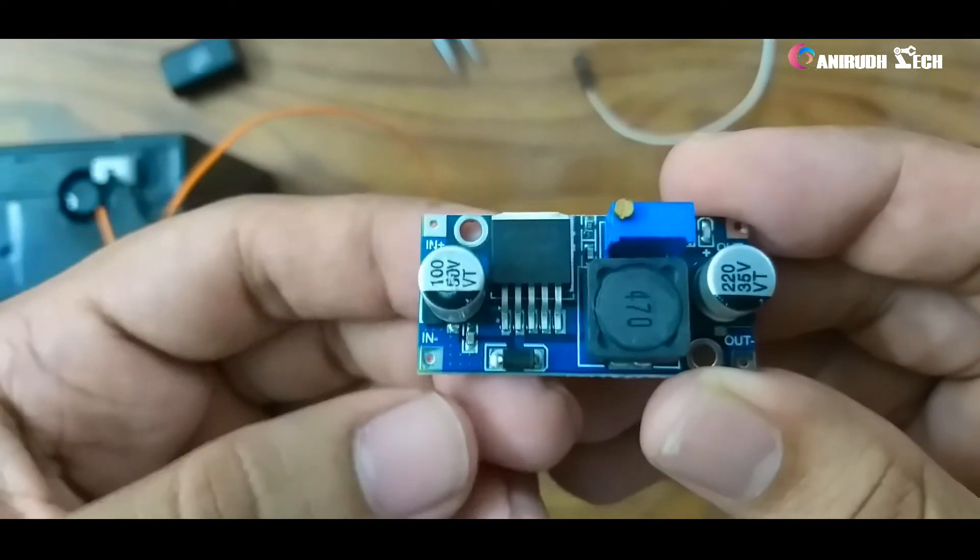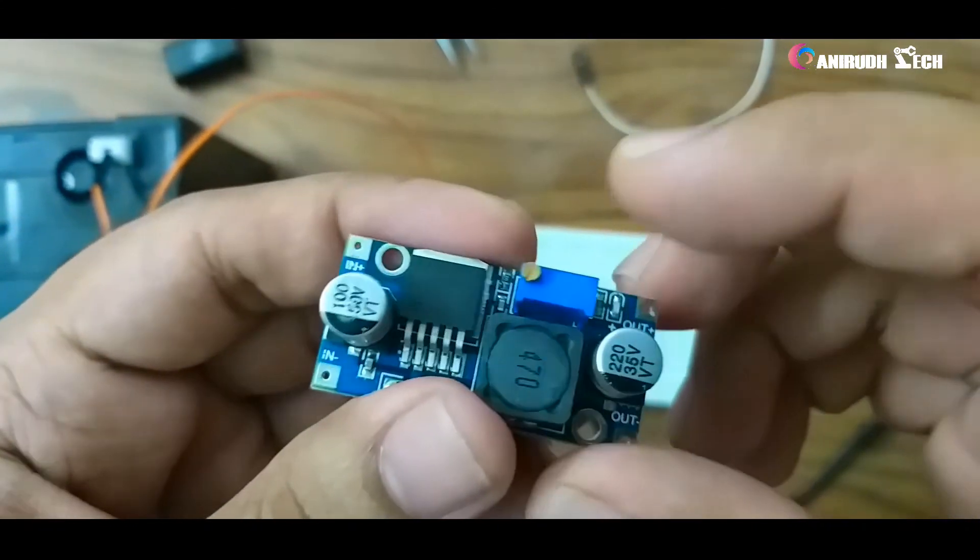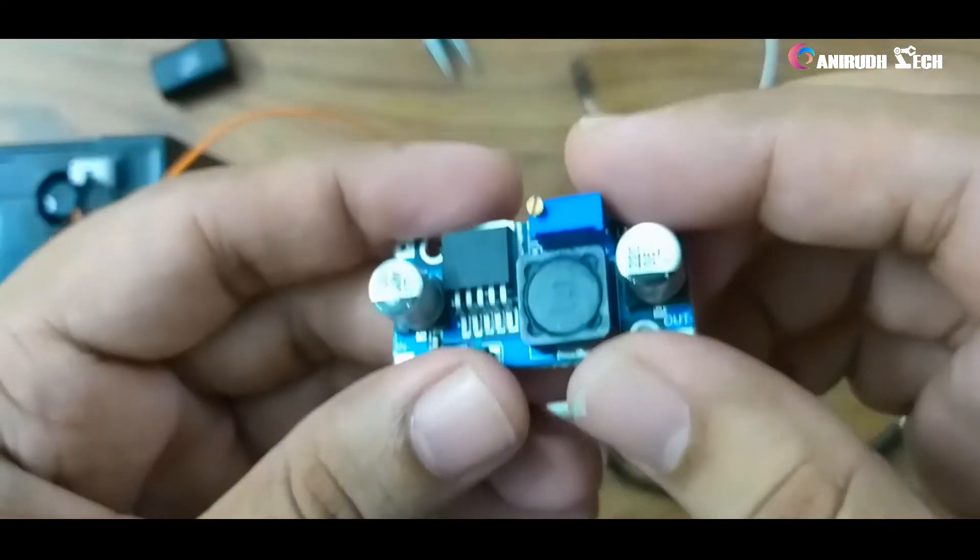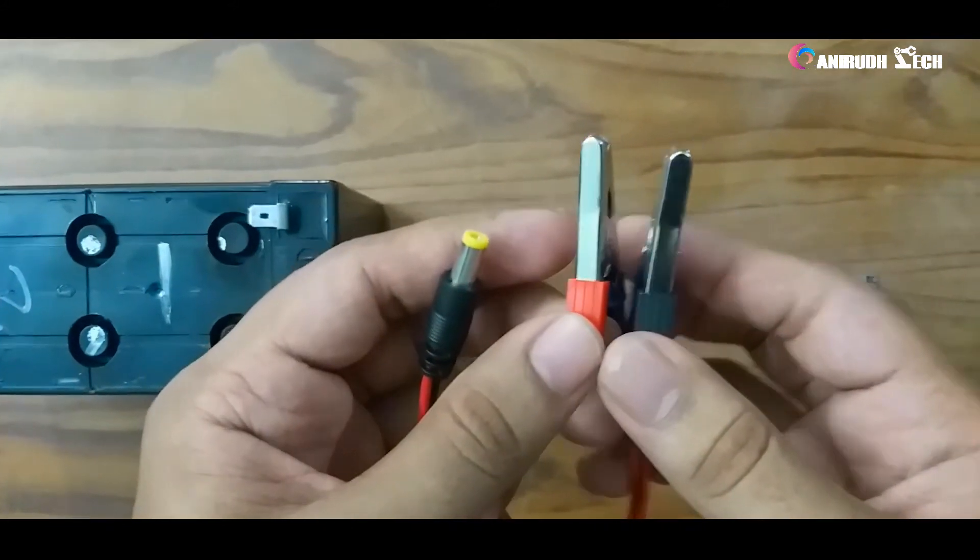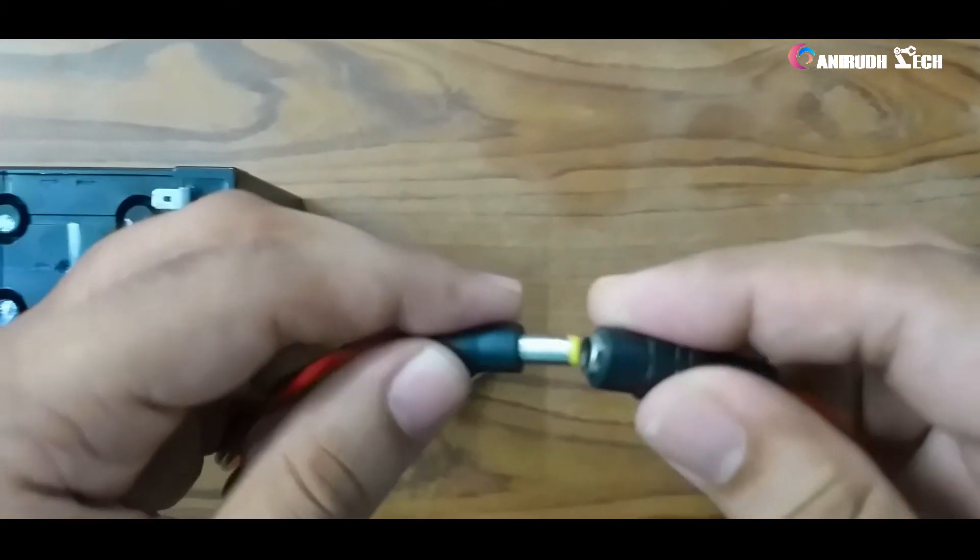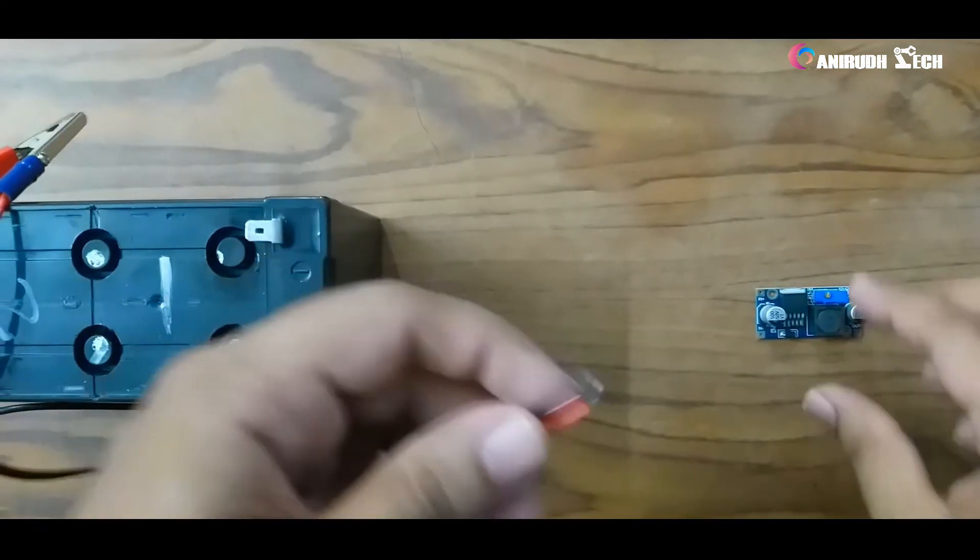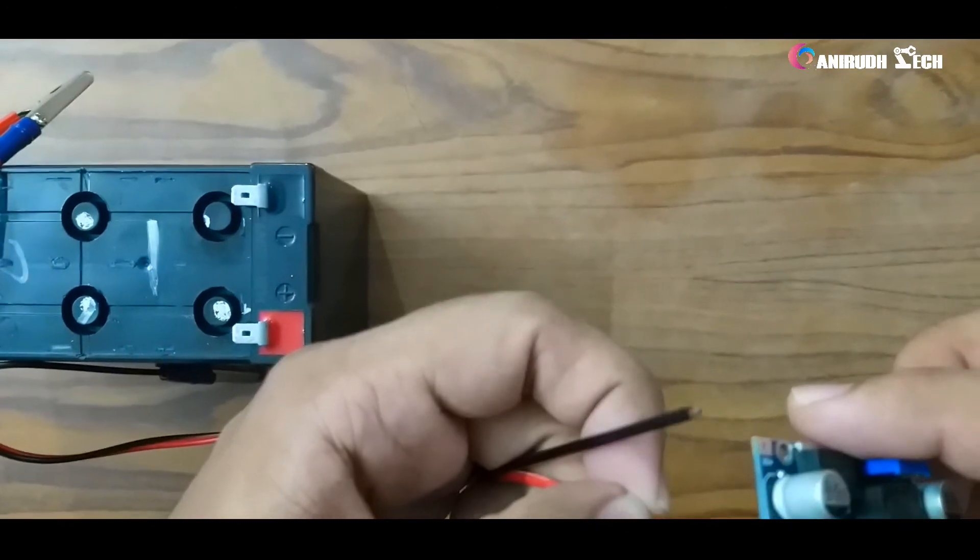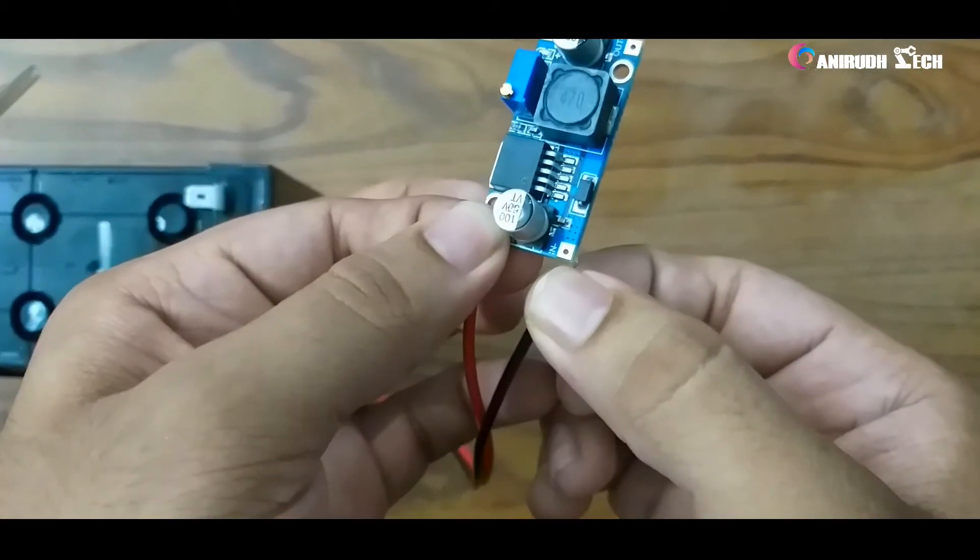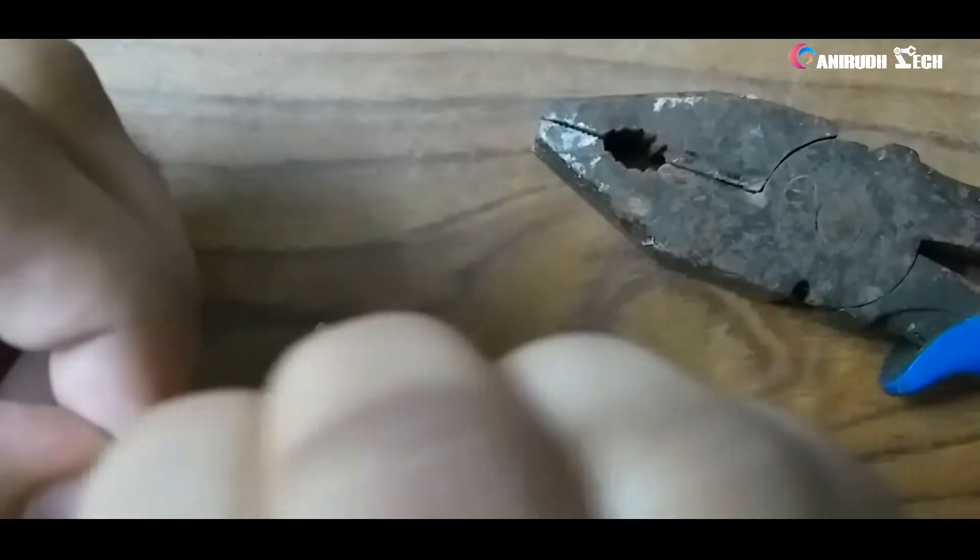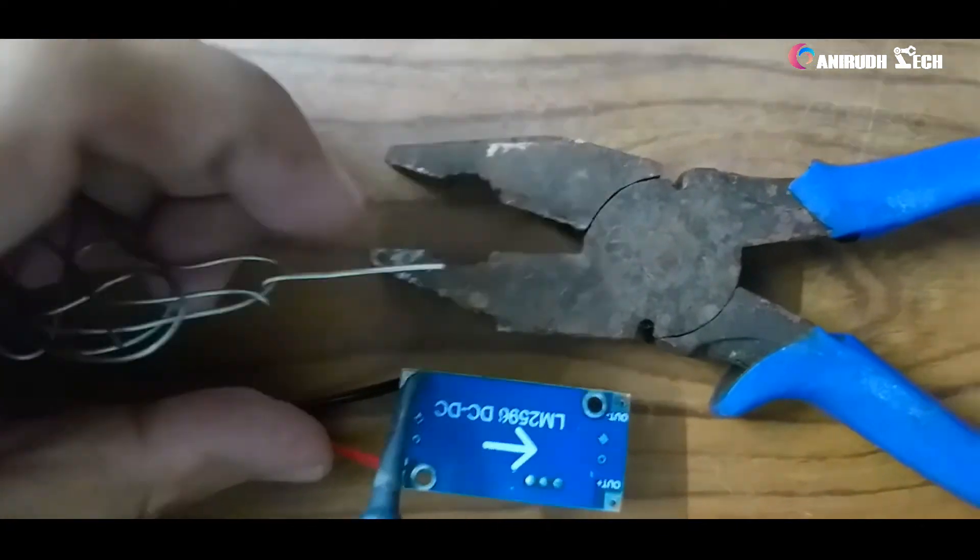Here it is input positive and negative, and here it is output positive and negative. Here we have a potentiometer, we can adjust the output voltage here. Now we can check how it works. I am going to connect the output from the battery to this buck converter's input. I am making use of two crocodile clips, positive and negative. Before connecting, we want to solder the negative and positive of the wires to the buck converter. We want to connect positive here and negative here.